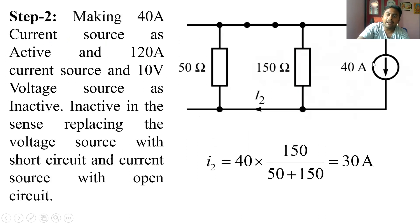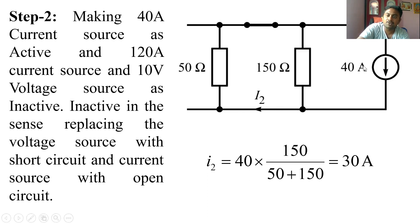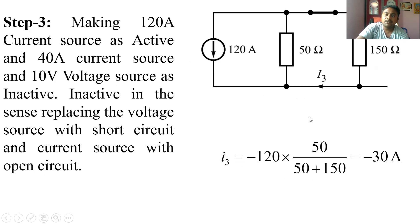In Step 2, the 40 A current source is active, the 10 V voltage source is replaced with a short circuit, and the 120 A current source is replaced with an open circuit. The current divides between the two resistances. Applying the current division rule to find the current through the 50 Ω branch: I2 = 40 × (150) / (50 + 150) = 30 A.